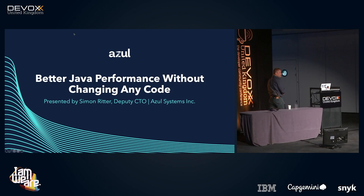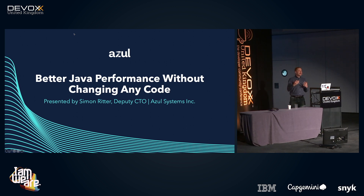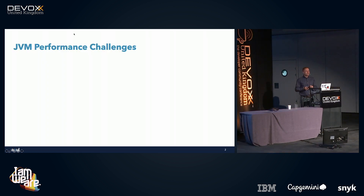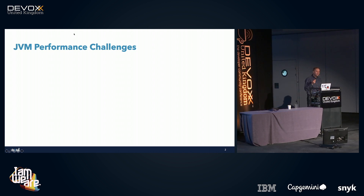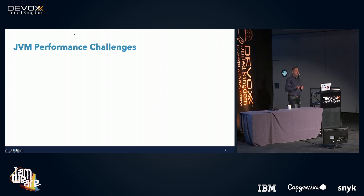Good afternoon and welcome. I've got 16 minutes to talk about how we can improve Java performance without changing any code. I want to start off by exploring what are the reasons that we need to improve performance, because the JVM is a very powerful piece of software — really the reason that Java has maintained its popularity over the last 26 years — but there are some things about the way the JVM works that can impact performance in ways that might not be ideal.